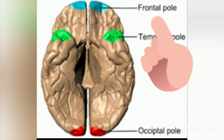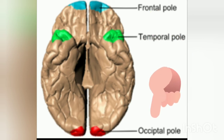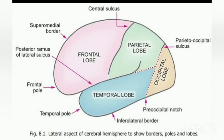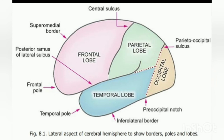The cerebral hemisphere has three poles. The frontal pole is at the anterior end. The occipital pole is at the posterior end. The temporal pole is at the anterior end of the temporal lobe. Each cerebral hemisphere is divided into four lobes: frontal, parietal, occipital, and temporal. Their positions correspond roughly to that of the overlying bones. These lobes are appreciated best on the superior lateral surface.